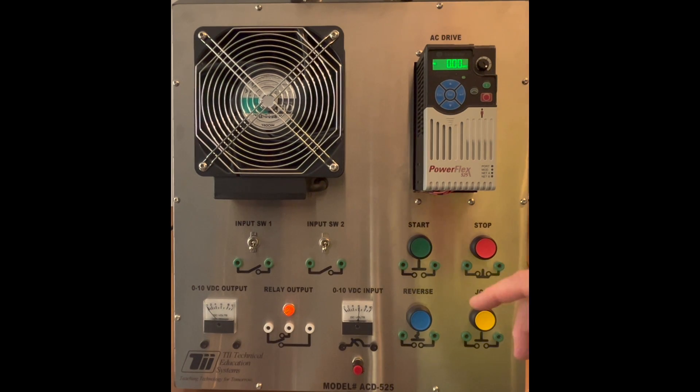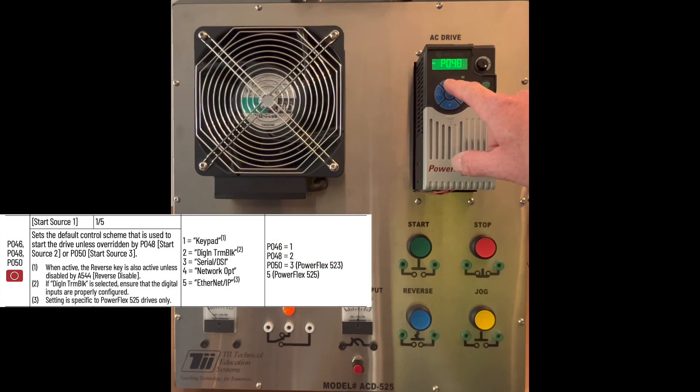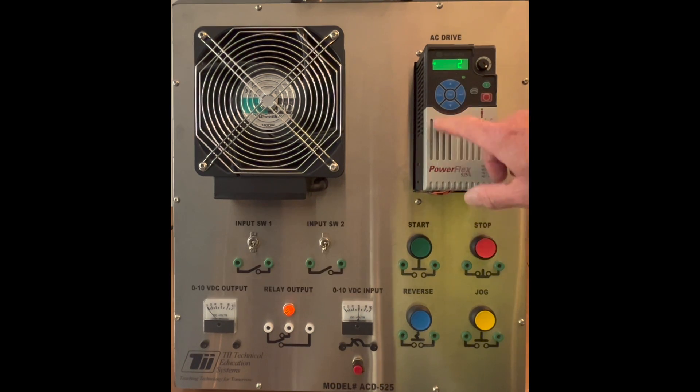So this is how this is programmed. We're going to hit the escape button, and we're going to bring this into P. We're going to bring this up, hit enter, bring this up to 46, and hit enter. We're going to program this to 2, and this will say that we're going to use the terminal blocks as our start button. So we're going to hit enter here.